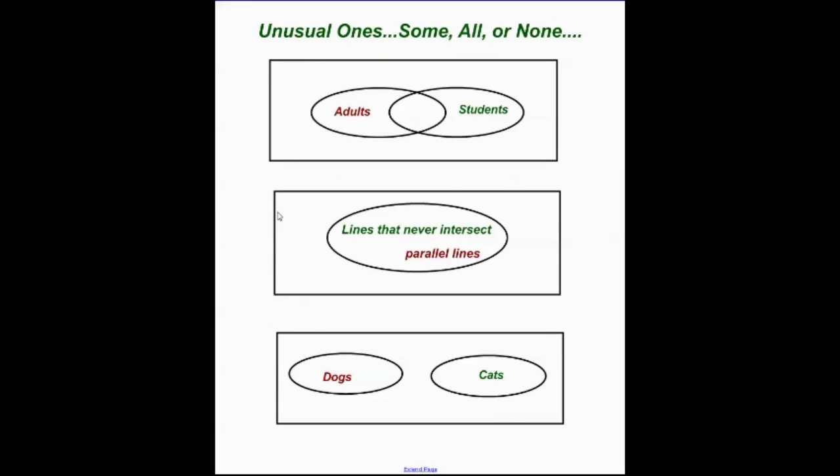Here are some unusual ones. We don't encounter this a lot, but it is a concept. We want you to have some familiarity going into Algebra 2. Here we have some adults, and the some part is right here. Some adults, we have some adults and students overlapping. This is the intersection. We can call this the intersection. And some adults are students. Well, some students are adults.